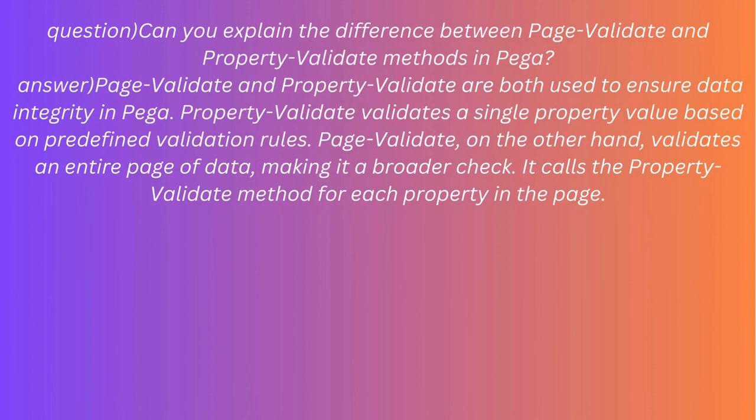Question: Can you explain the difference between Page Validate and Property Validate methods in PEGA? Answer: Page Validate and Property Validate are both used to ensure data integrity in PEGA. Property Validate validates a single property value based on predefined validation rules. Page Validate, on the other hand, validates an entire page of data, making it a broader check — it calls the Property Validate method for each property in the page.